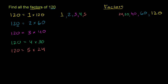Let's move on to 6. Is 120 equal to 6 times what? To be divisible by 6, you have to be divisible by 2 and 3. We know we're already divisible by 2 and 3, so we're definitely going to be divisible by 6. 12 divided by 6 is 2, and then you have that 0 there, so 120 divided by 6 would be 20. So 6 and 20 are two more factors.